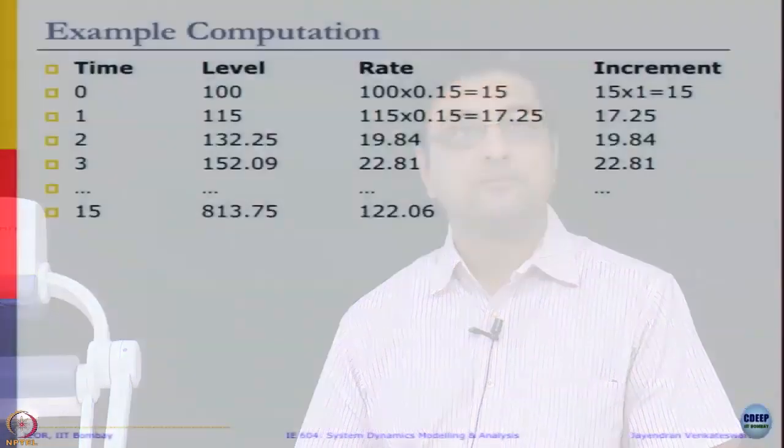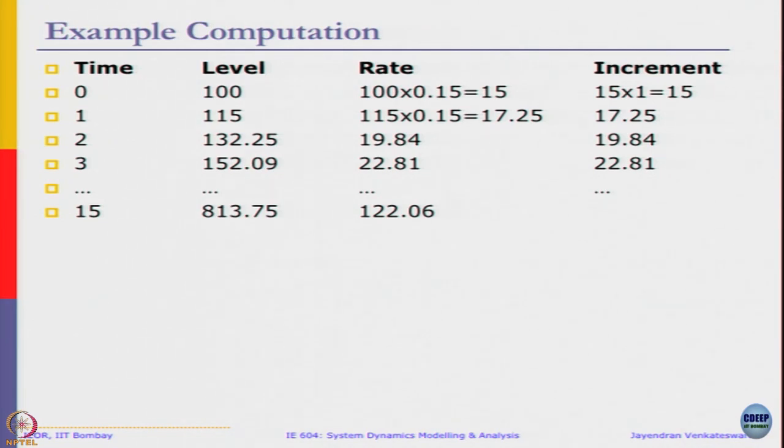Then we repeat the same step. 115 into 0.15 is 17.25. So the next period we add 17.25 to the stock. From this I calculate this, then I calculate this, then I add this to here. I can see when you start with 100 with every time unit passing, I am adding an increment value equal to interest rate multiplied by the current value of stock. We are assuming we are not taking the money out.